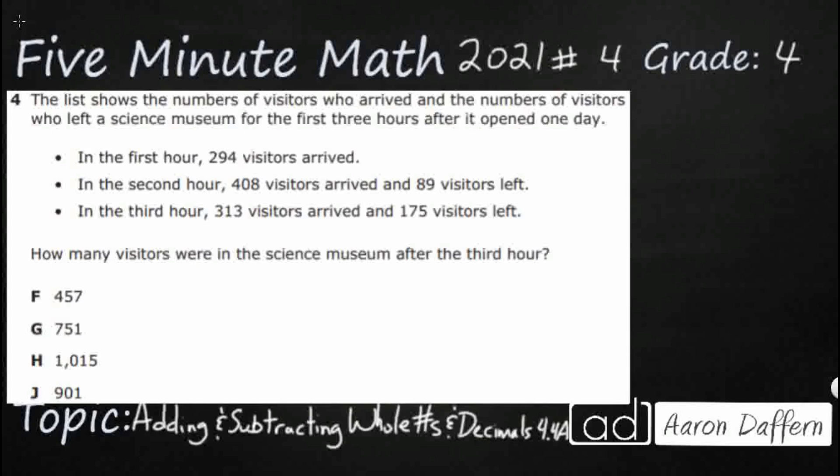So we have a list here of visitors who arrived and the number of visitors who left a science museum for the first three hours after it opened one day. We've got 294 visitors arriving, then in the second hour, 408 visitors arriving and 89 visitors leaving, and then 313 visitors arriving in the third hour and 175 leaving. So that's a lot of arriving and leaving. So how many people were here after this third hour?